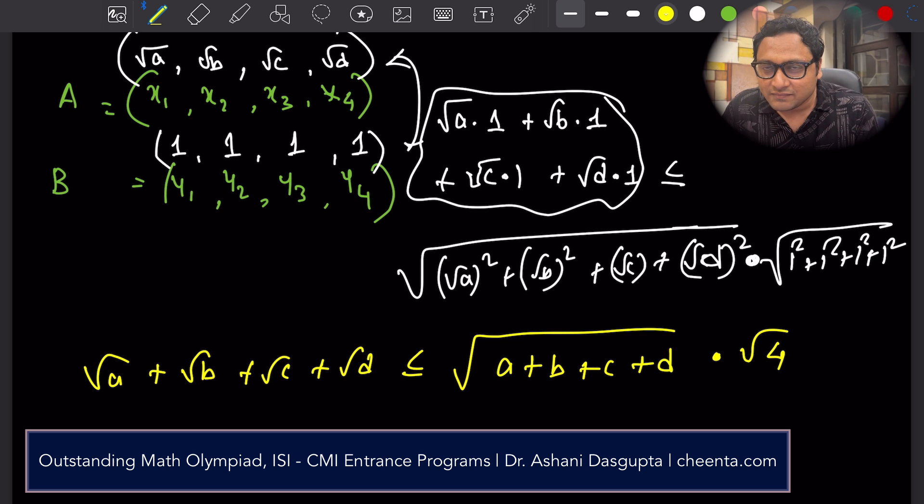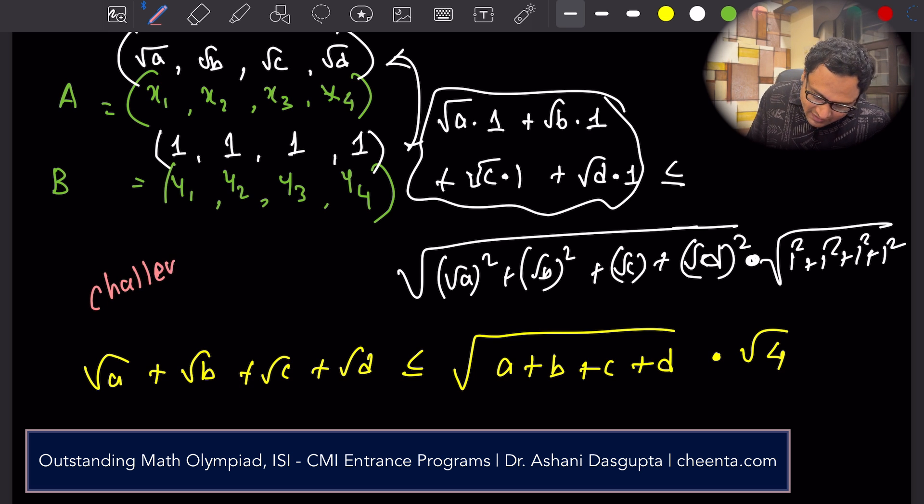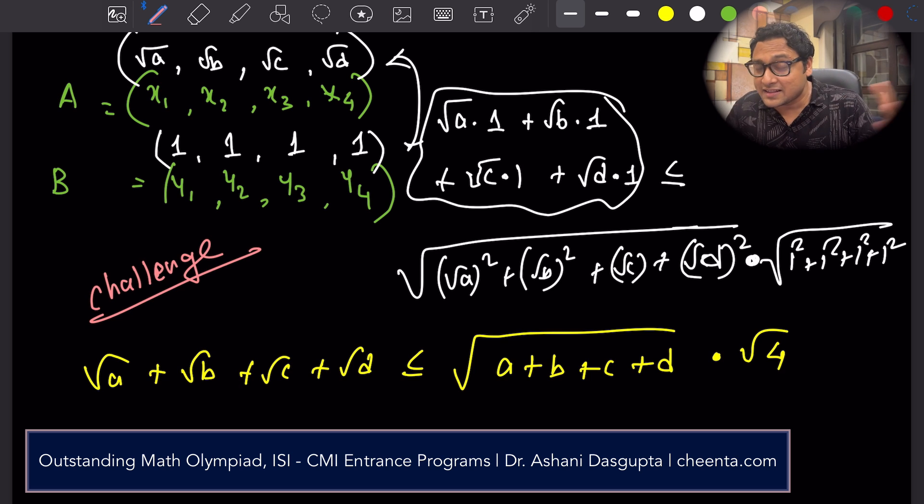We are almost there. You have to just write one more line and your answer is there. So here is a challenge. Just one more line. Nothing extraordinary needs to be done here. Just replace something with something and it will be done.